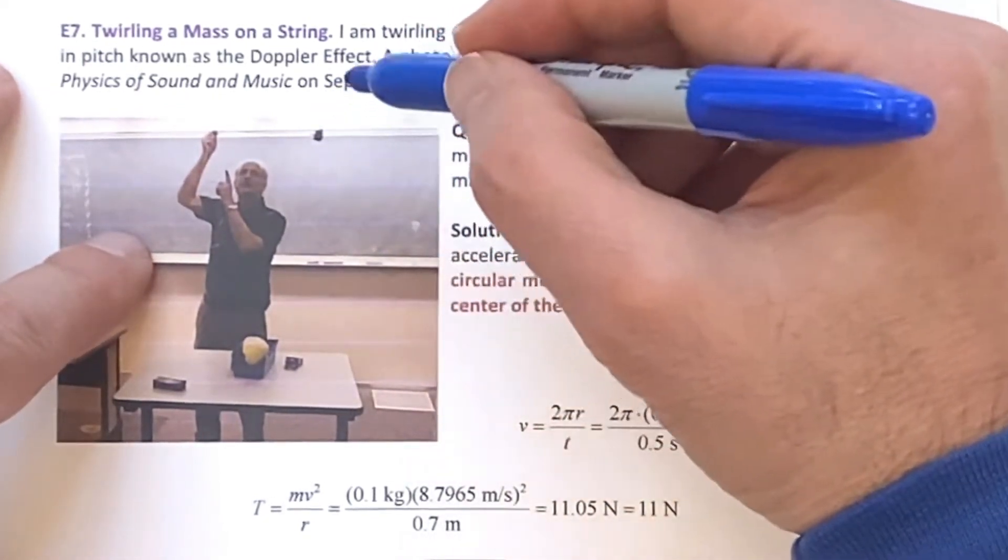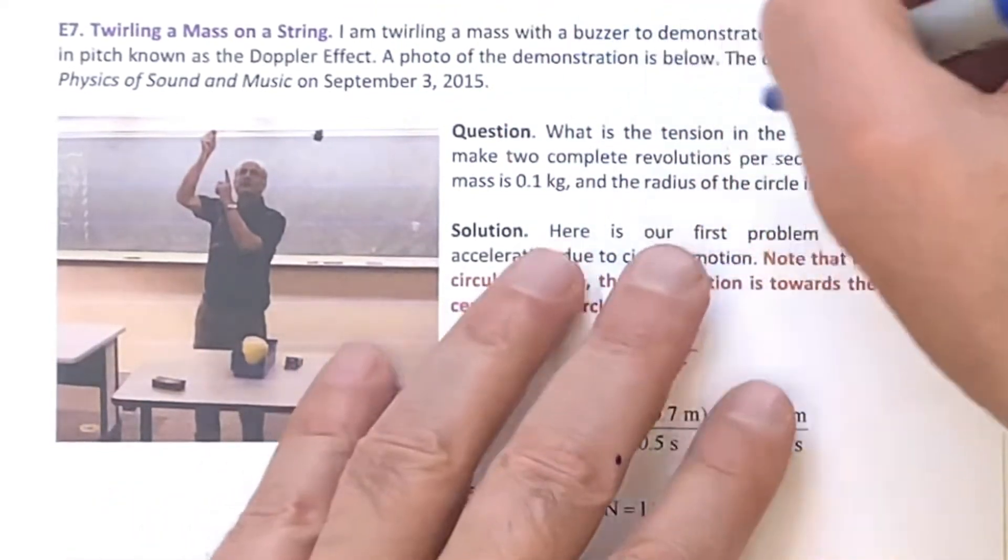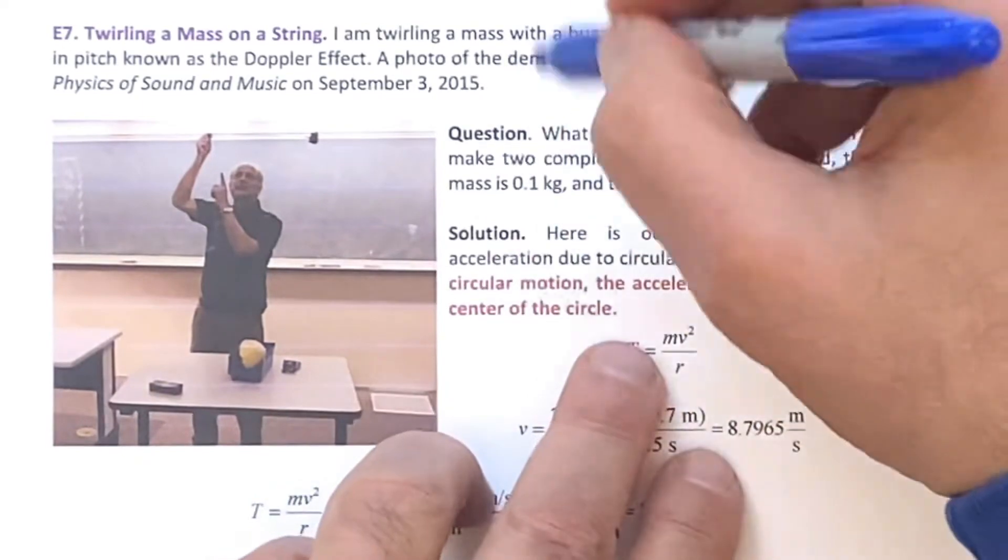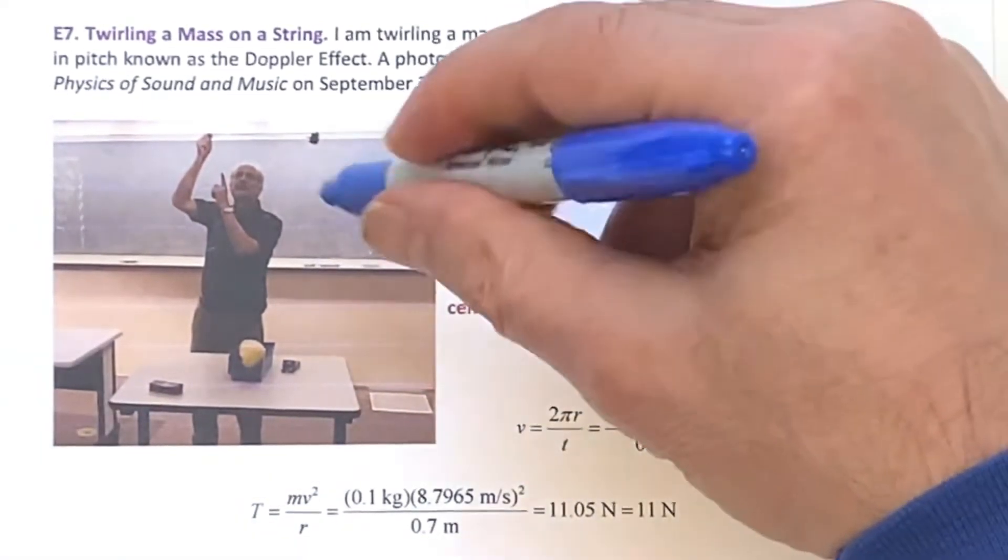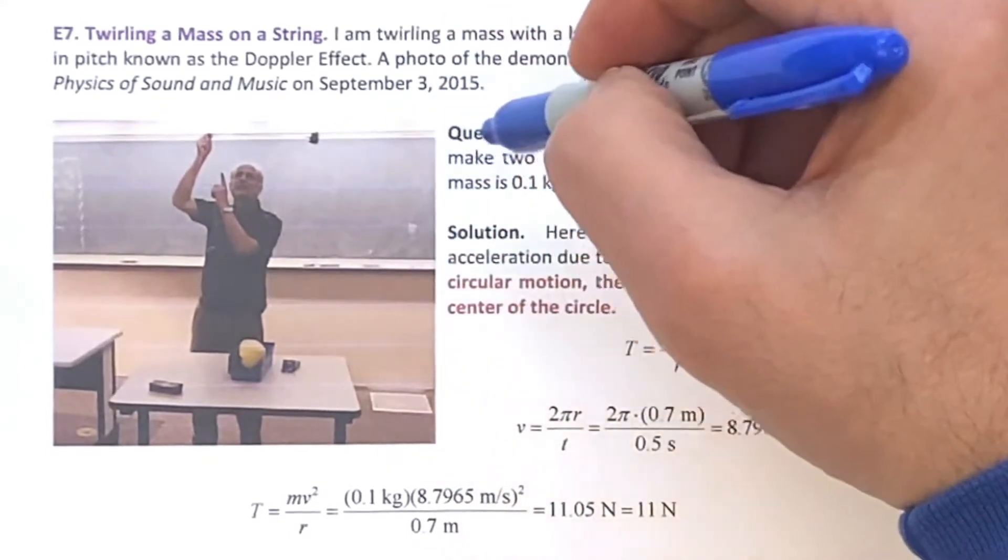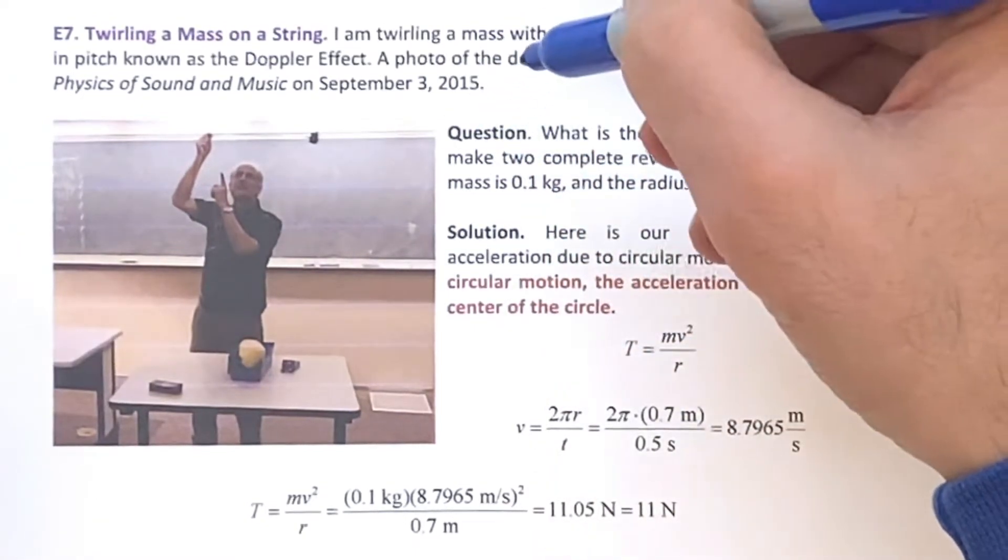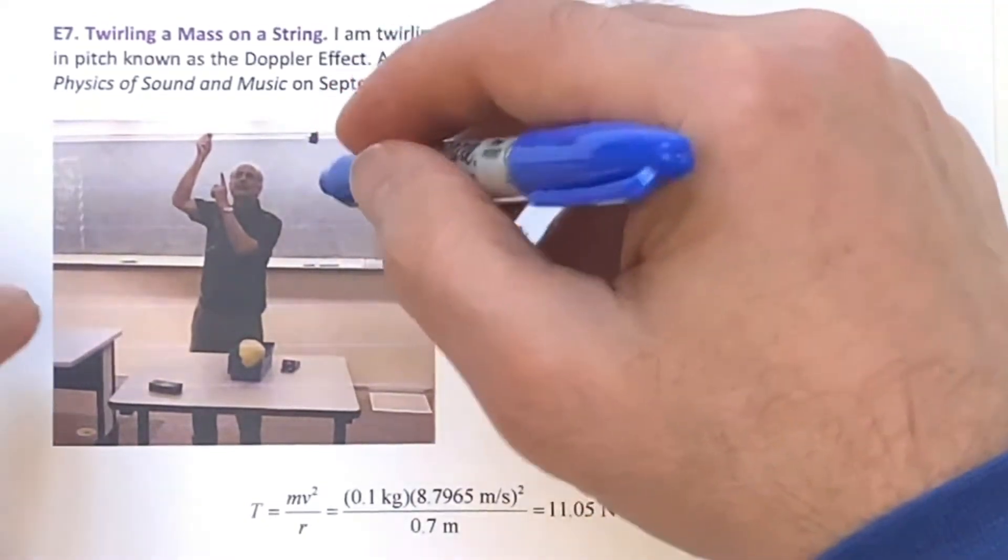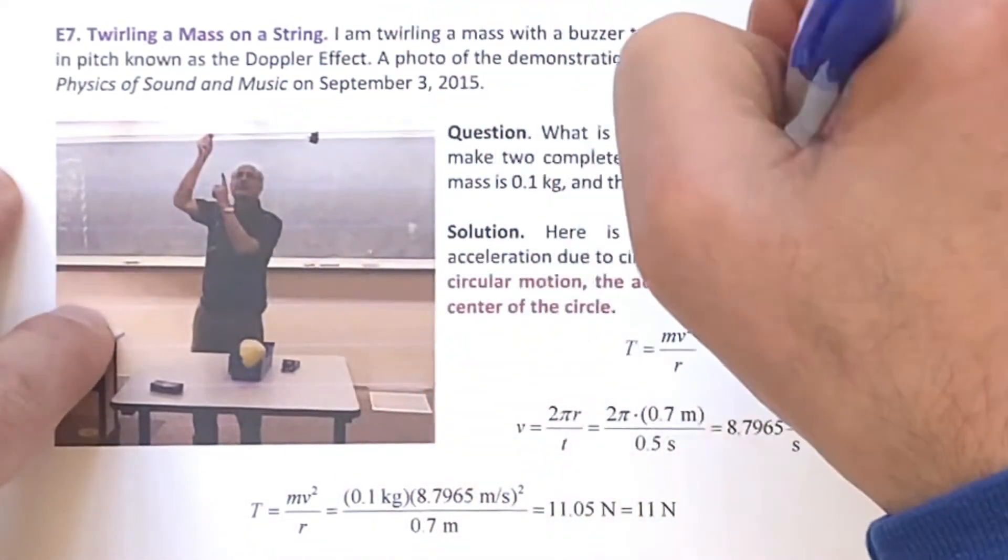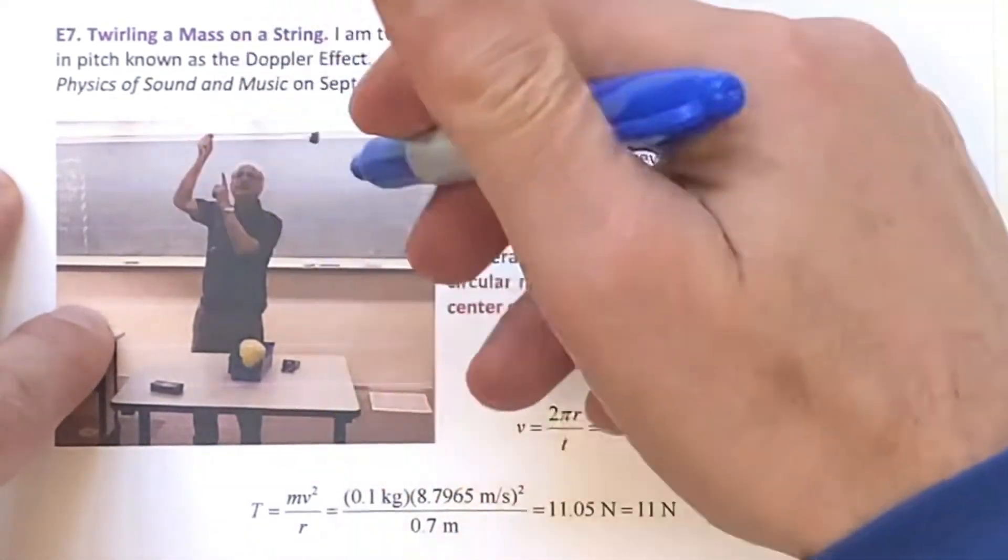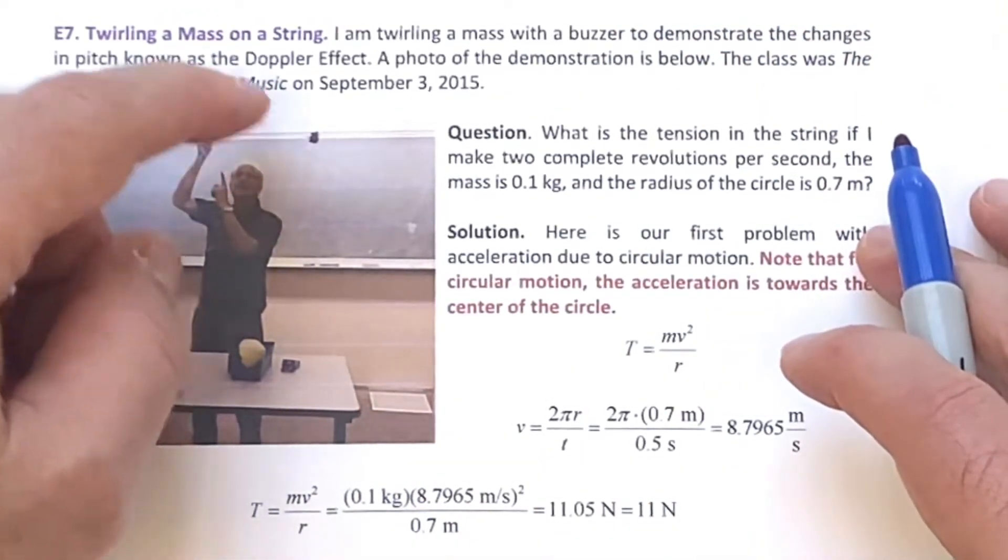And the question is, in this case, if we're given this information: two complete revolutions in one second, which is basically what I was doing. This is like real-life data. And the mass is a tenth of a kilogram. Again, fairly related to the actual experiment. And the radius of the circle is 70 centimeters, 0.7 meters. Again, very much from the problem itself. Then find the tension in the rope.